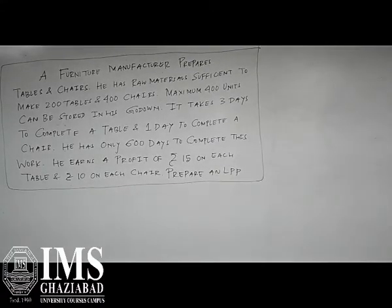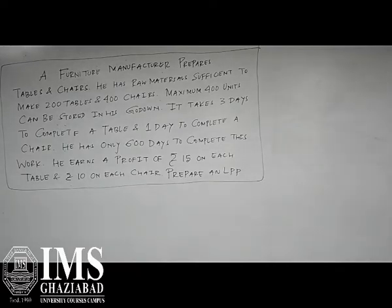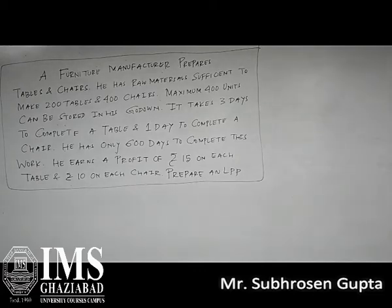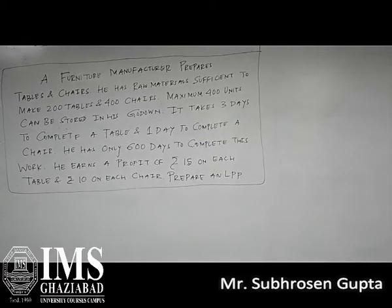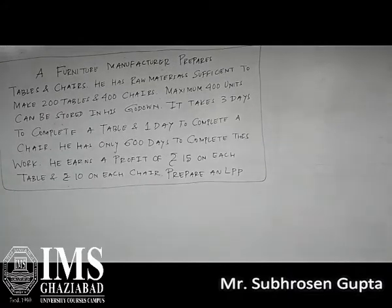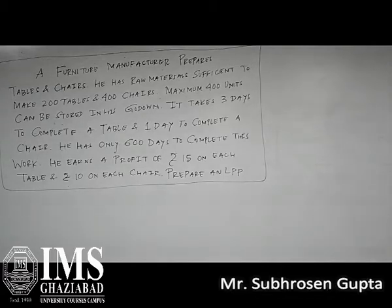He prepares tables and chairs. He has raw materials sufficient to make 200 tables and 400 chairs. Maximum 400 units can be stored in his go-down. It takes 3 days to complete a table and 1 day to complete a chair. He has only 600 days to complete this work. He earns a profit of Rs.1515 on each table and Rs.1010 on each chair. Prepare an LPP.